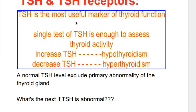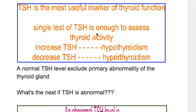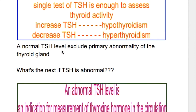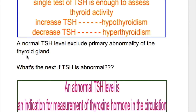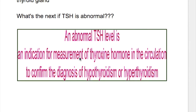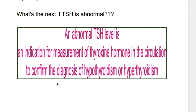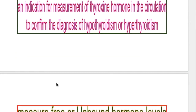TSH is the most useful marker of thyroid function. A single test of TSH is enough to assess thyroid activity. Increased TSH occurs in hypothyroidism and decreased TSH occurs in hyperthyroidism. A normal TSH level excludes primary abnormality of the thyroid gland. An abnormal TSH level is an indication for measurement of thyroxine hormone to confirm the diagnosis of hypothyroidism or hyperthyroidism.